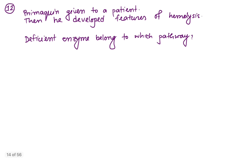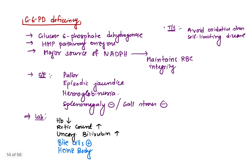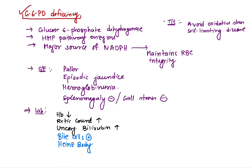Coming to question number 12: primaquine is given to a patient who then shows features of hemolysis. The deficient enzyme belongs to which pathway? The deficient enzyme here is G6PD — glucose-6-phosphate dehydrogenase — because whenever there is oxidative stress, this enzyme deficiency leads to hemolysis. G6PD is the most important enzyme for the HMP pathway.